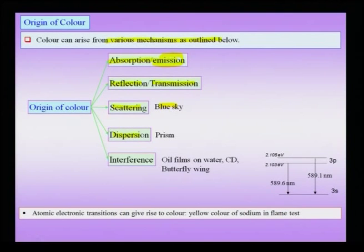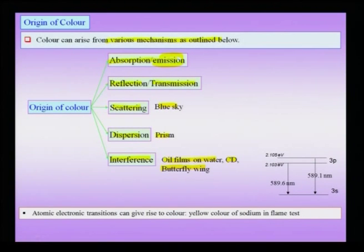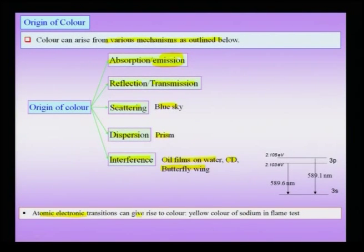Dispersion itself — as in the prism — can give rise to colors when white light is split into components. Also interesting are interference colors: oil films on water show colors that change with viewing angle; a compact disc shows iridescent colors from interference; butterfly wings show iridescent colors from interference. Many blues in nature — including birds' blue color — come from interference. An example of emission color is the yellow color of sodium in a flame test, arising from the 3s to 3p transitions giving the two famous sodium vapor lines in the yellow region.